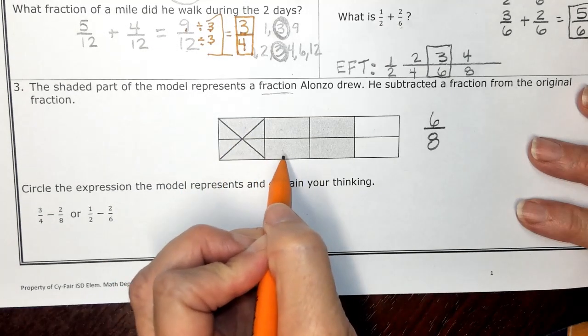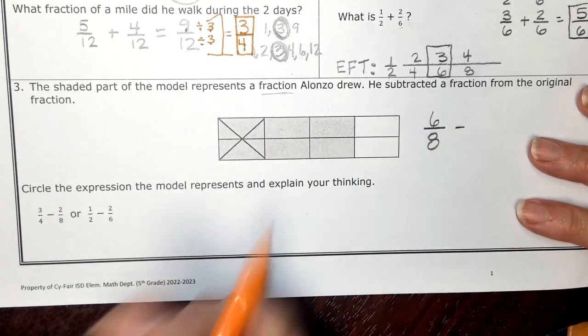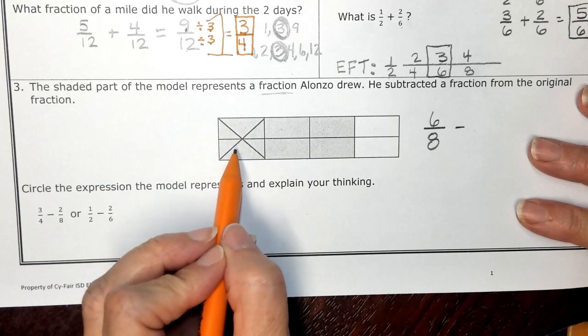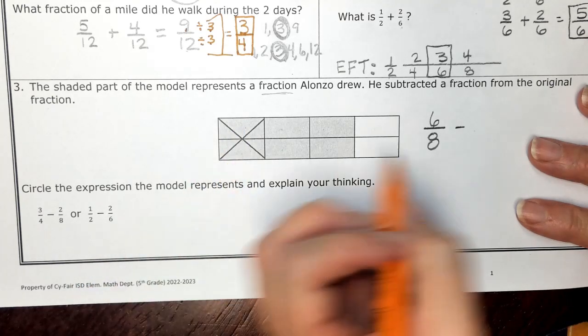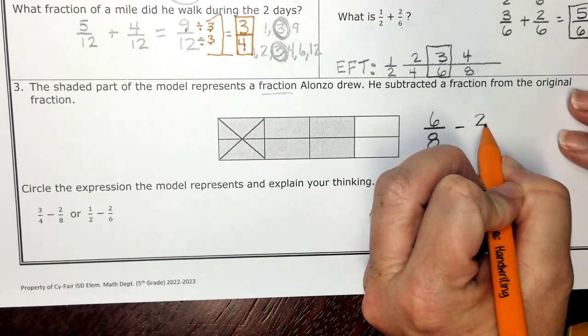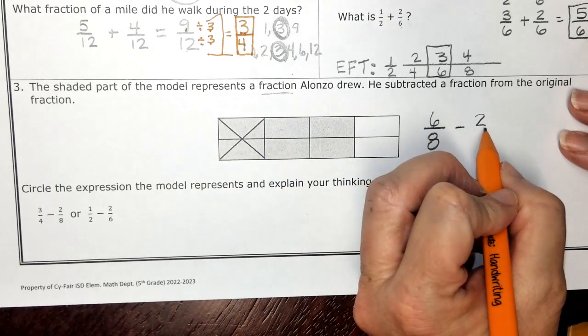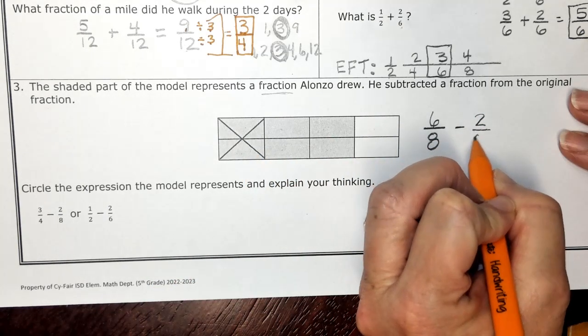Now it looks to me like he X'd out some. He X'd out two of those pieces. So he subtracted two of the eight pieces.